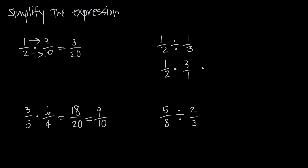And now this is just a multiplication problem — it's as simple as that. Just like with multiplication, 1 times 3 in the numerators is 3, and 2 times 1 in the denominators is 2. And we have our final answer of 3/2.